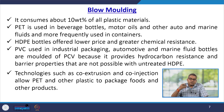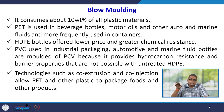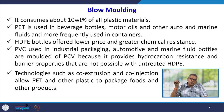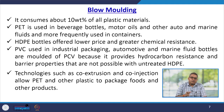PET bottles — water bottles and others — are essentially made by blow moulding. PET is used in beverage bottles, motor oils, and other auto and marine fluid containers. HDPE bottles offer lower price and greater chemical resistance. PVC is used in industrial packaging and automotive and marine fluid bottles, providing hydrocarbon resistance and barrier properties not possible with untreated HDPE.